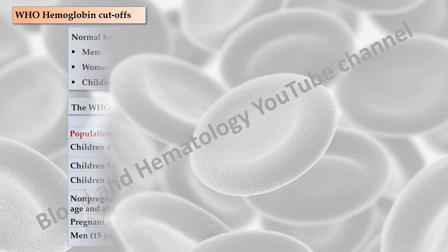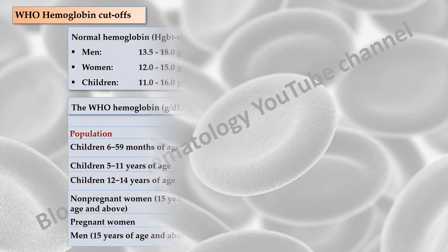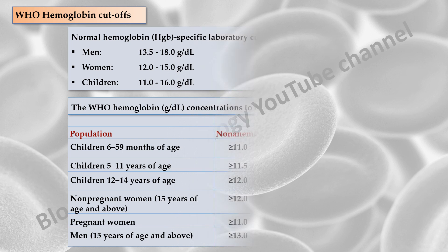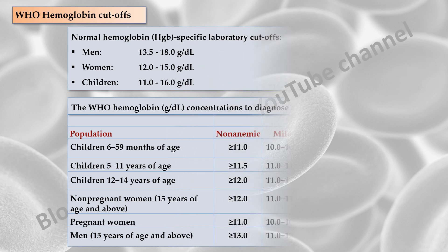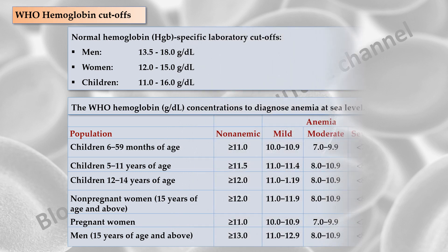The WHO normal hemoglobin concentrations and cutoffs for anemia are widely applied globally and are sex, age, and pregnancy specific.